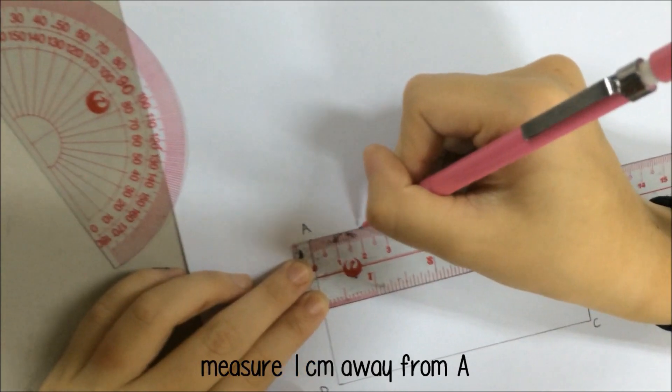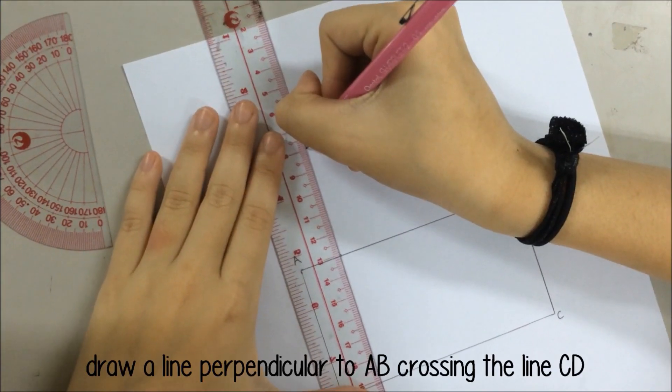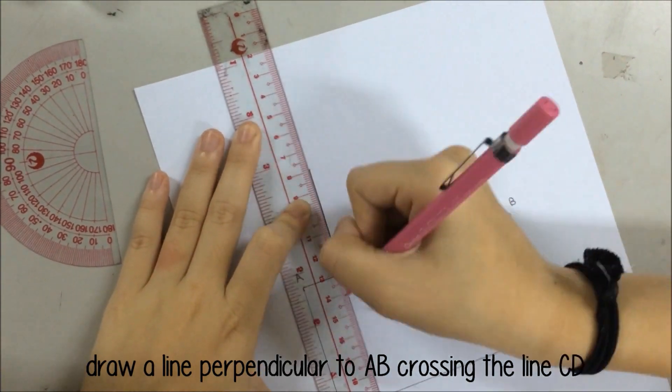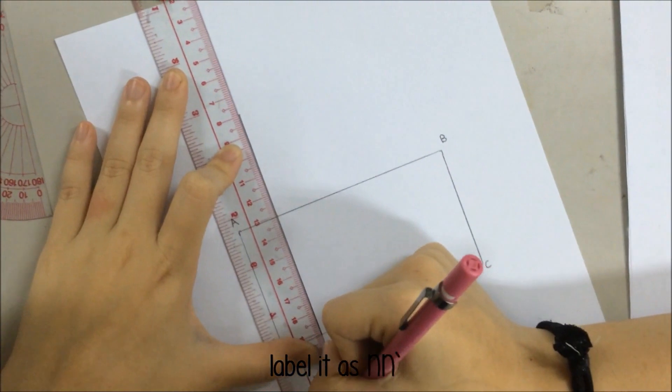Step 2: Measure 1 cm away from A. Draw a line perpendicular to AB, crossing the line CB. Label it as NN.